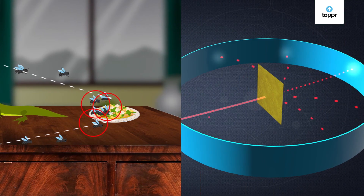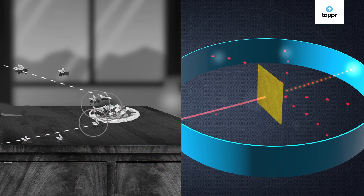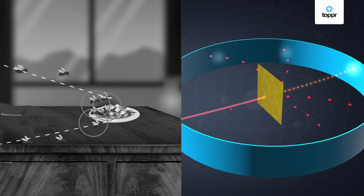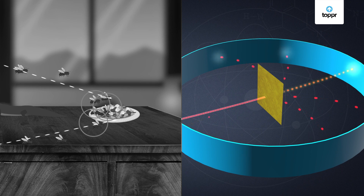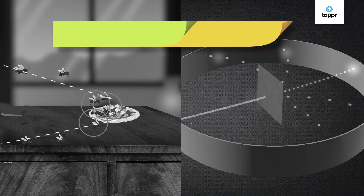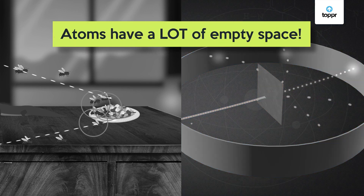So, this means that just like this group of flies, the alpha particles too did not get affected and passed straight through the atom. Hence, the atom must have a lot of empty space.